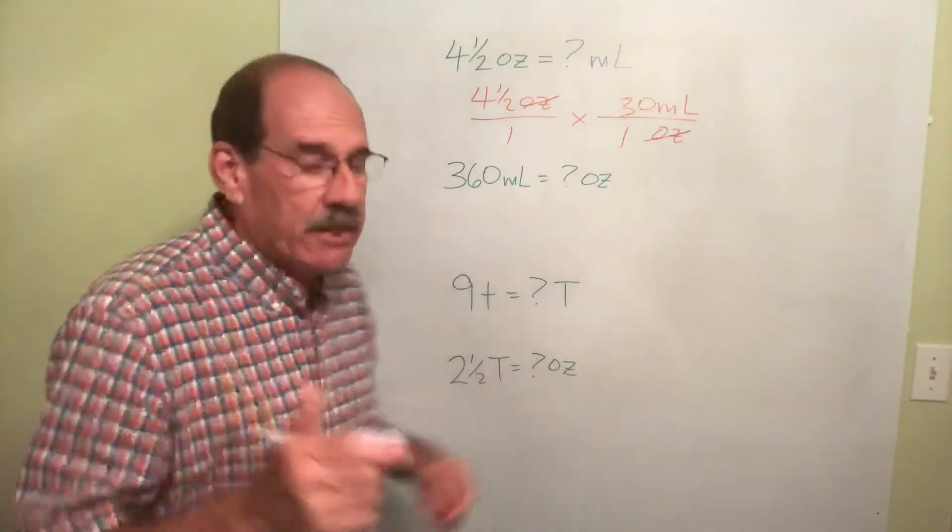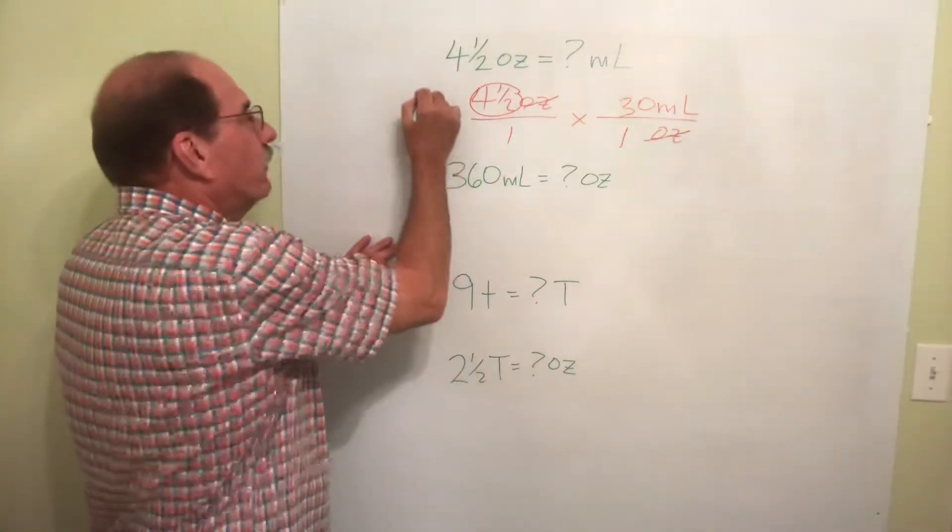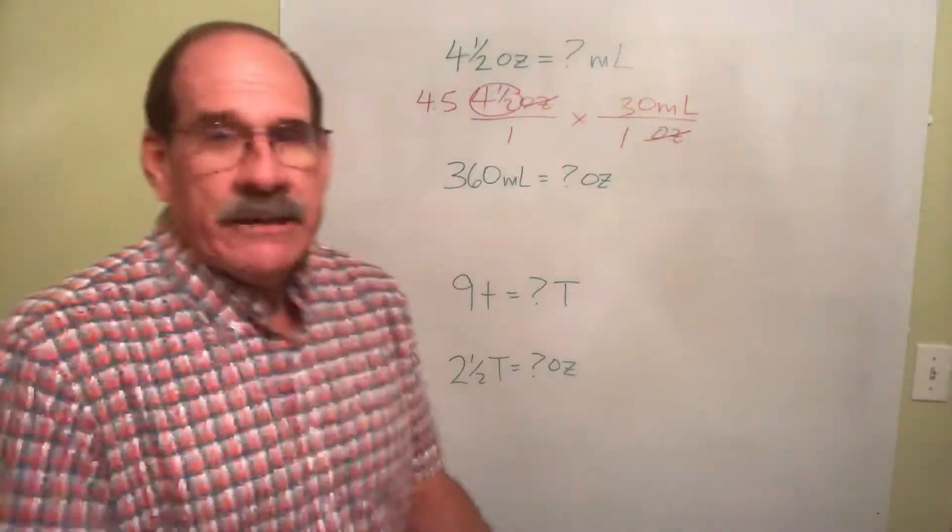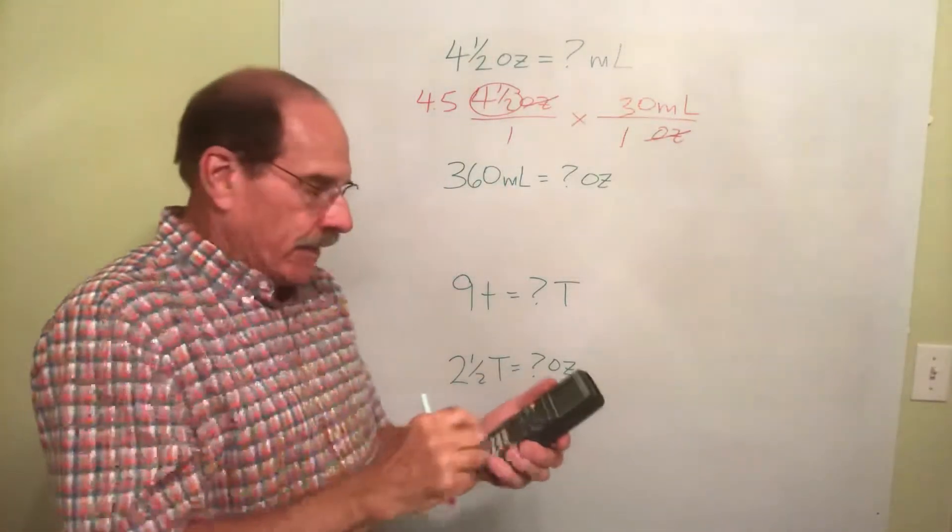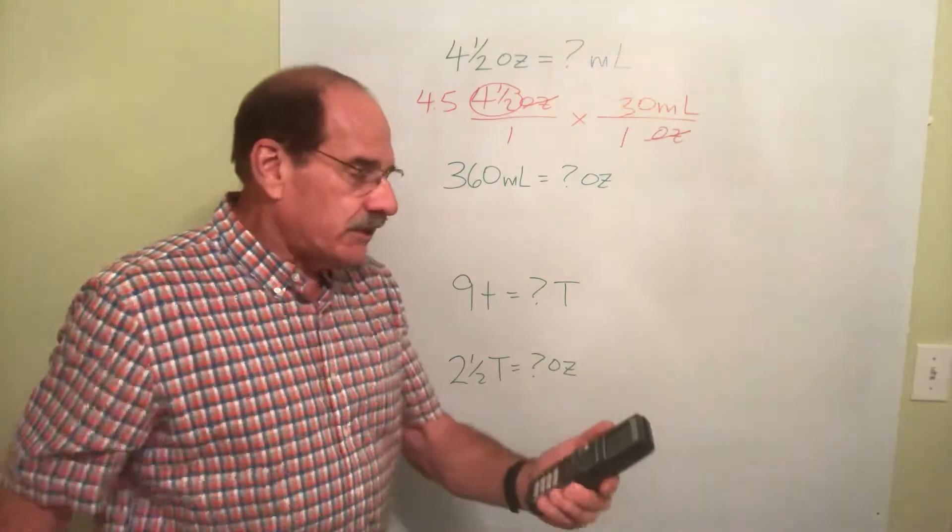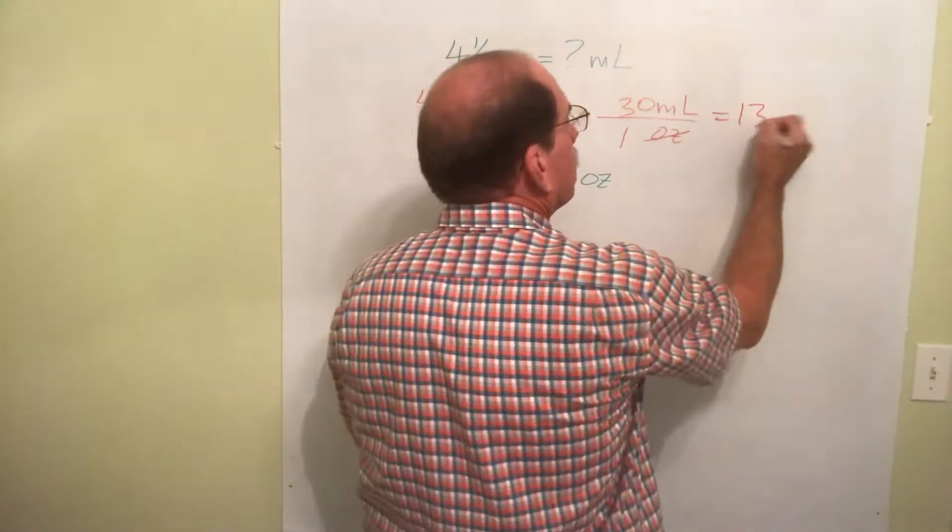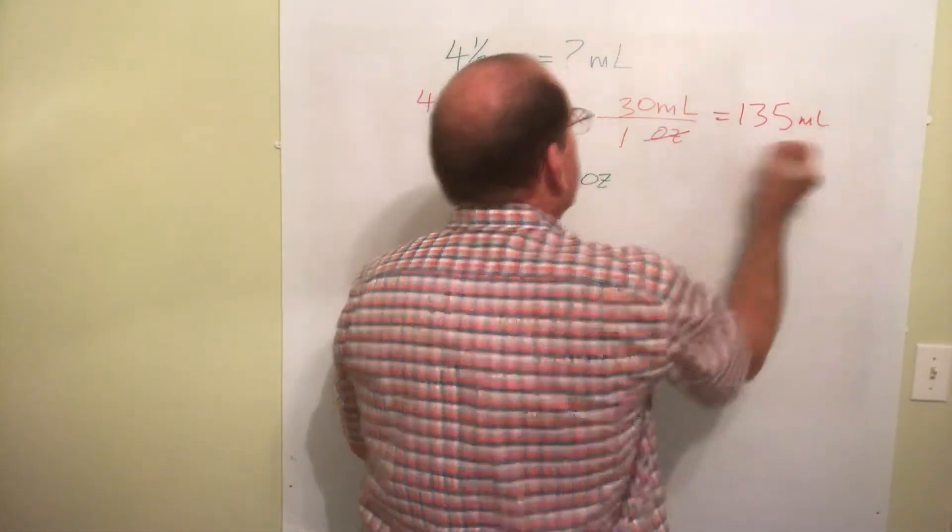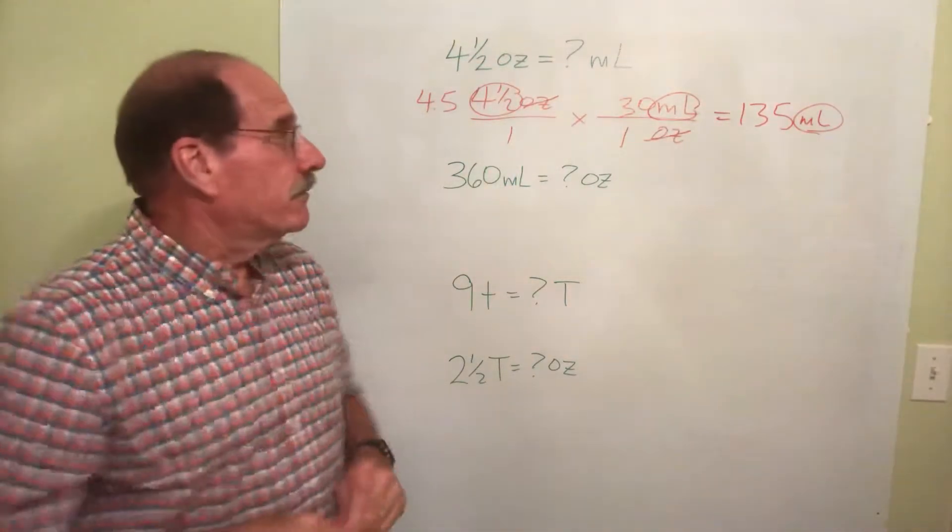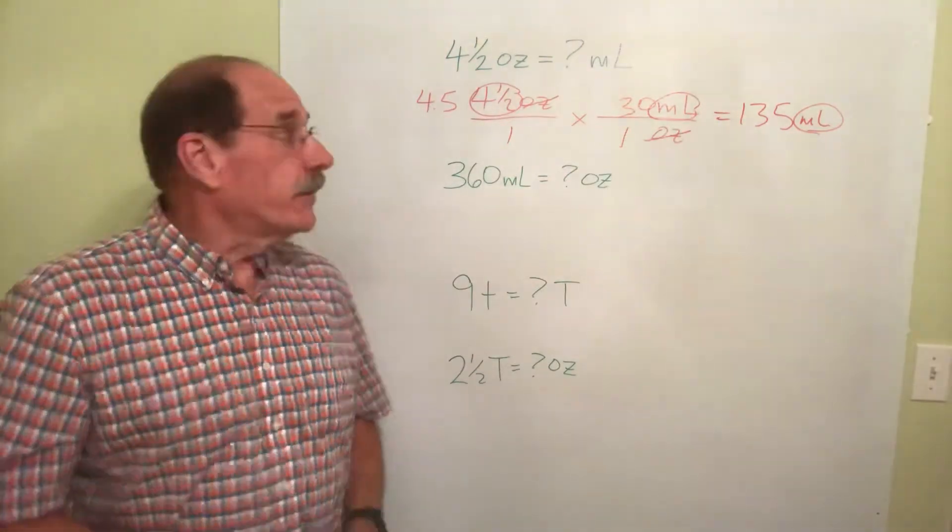Now to get the job done on your calculator, you need to convert that fraction into a decimal number. Well, that's 4.5. So take your calculator. You're going to hand it in the calculator, turn along. 4.5 times 30. Well let's see here, 135. So the answer is 135. Again, whatever the word is there, those are the units we have. So 4.5 ounces, the same thing as 135 milliliters.